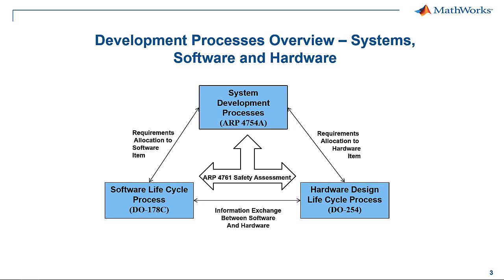Let's do a quick review of the commercial aerospace standards and their relationships. ARP4754A defines the systems engineering development processes, and that feeds down into the software and hardware development processes defined by DO178C and DO254, respectively. There must be coordination between the processes, and a safety assessment must be performed per ARP4761.